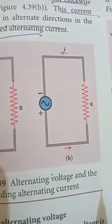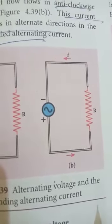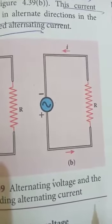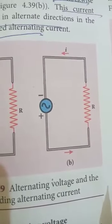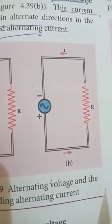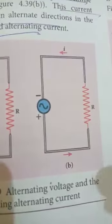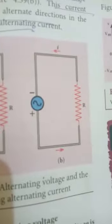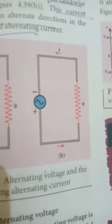This current flows in alternating directions in the circuit — it is called alternating current. That means current flows in both the positive and negative directions, so it is called alternating current.